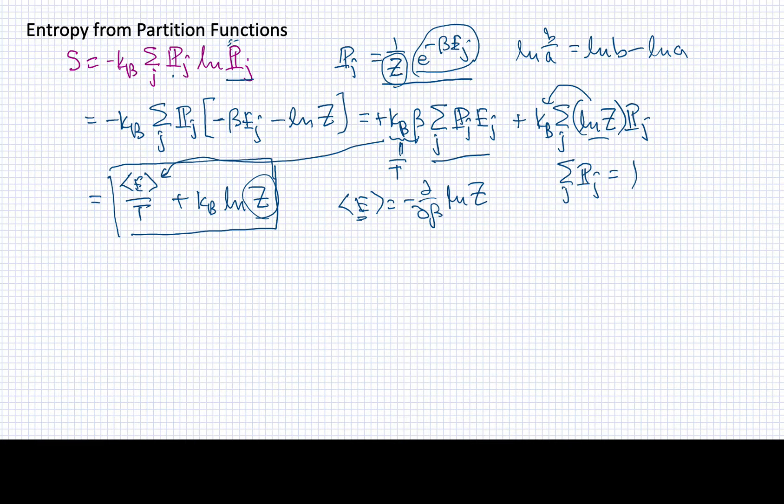I suppose I could write a more formal version of this: the entropy is going to be the internal energy over temperature plus kb log of the system partition function. This is going to be my working operation.